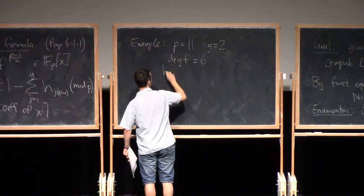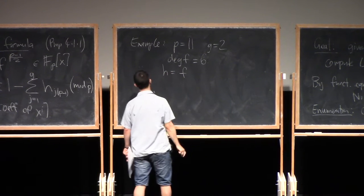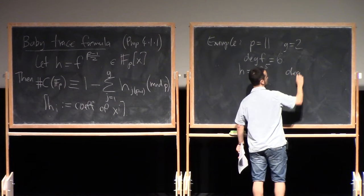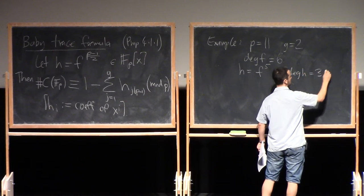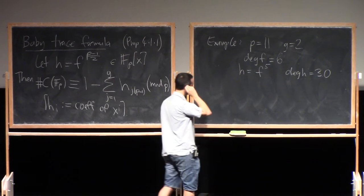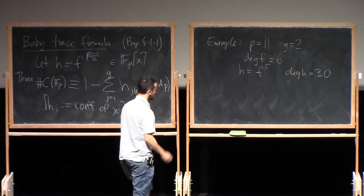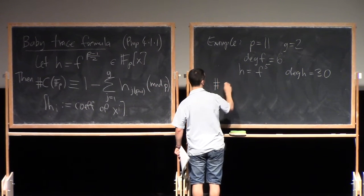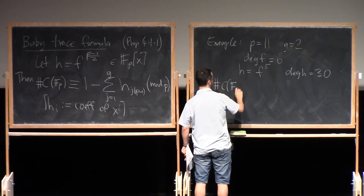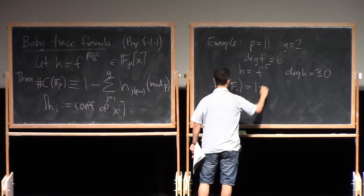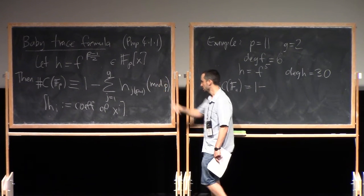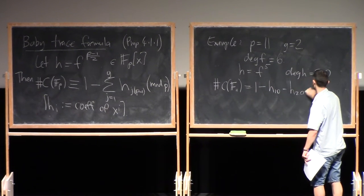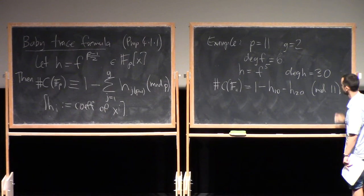And then H is going to be F to the power of P minus 1 over 2, which is 5. So the degree of H is going to be 30. And the coefficients we're interested in here, so I get number of points on the curve over F_11 is going to be 1 minus H_10 minus H_20. This is modulo 11.